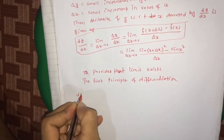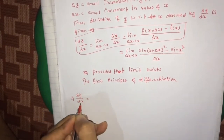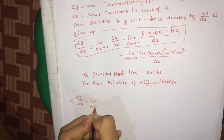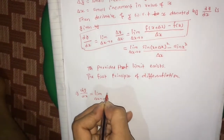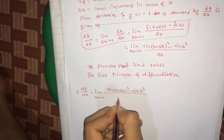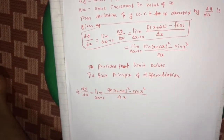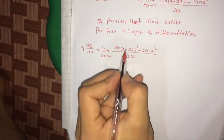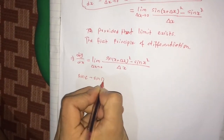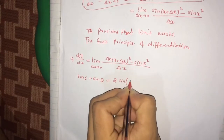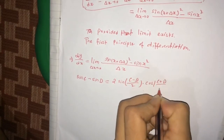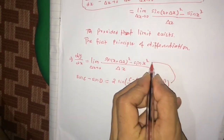Now let me simplify further. We have dy/dx = limit as Δx tends to 0 of [sin(x + Δx)² − sin(x²)] / Δx. To simplify this, we use the relation: sin C − sin D = 2 · sin[(C − D)/2] · cos[(C + D)/2]. We will apply this relation here.